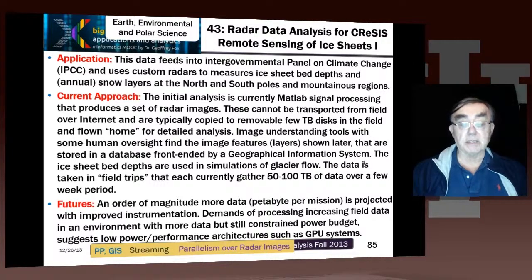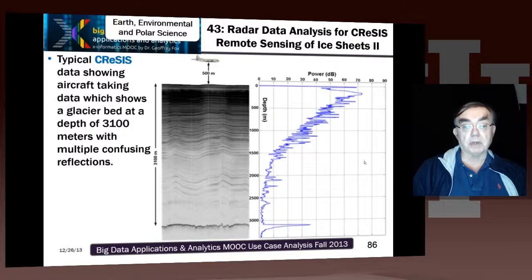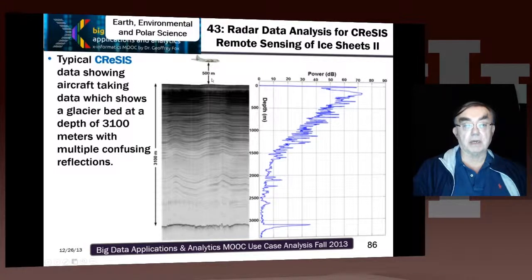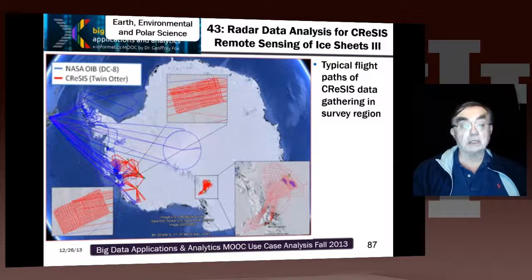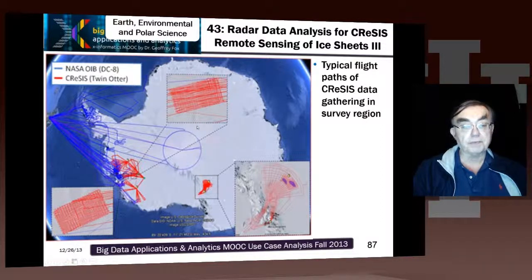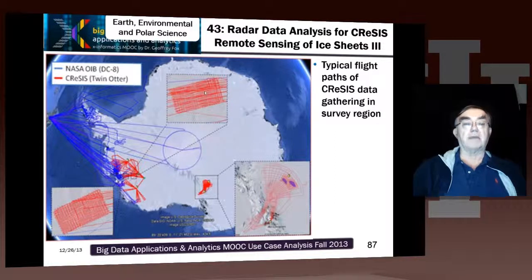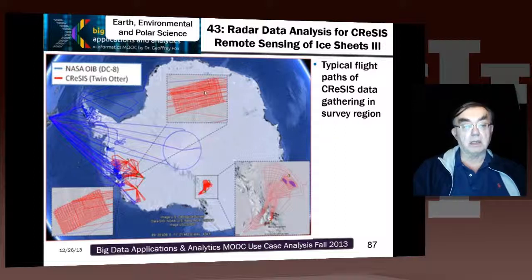GIS — Geographic Information System — is used to display the data. A typical example shows a glacier bed at around 3,100 meters depth with the aircraft taking radar 500 meters above. Another GIS view from this experiment shows different aircraft flight paths in blue or red depending on whether it's a DC-8 or a Twin Otter, since multiple aircraft are used. From this GIS view you can track the aircraft, click on flight paths, look at the data, and assess its quality.